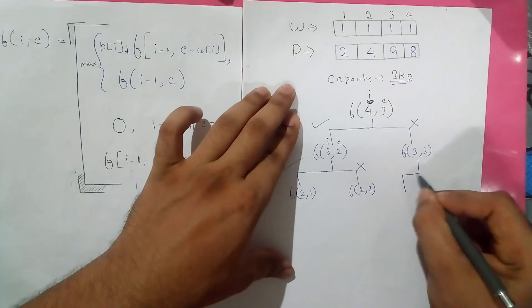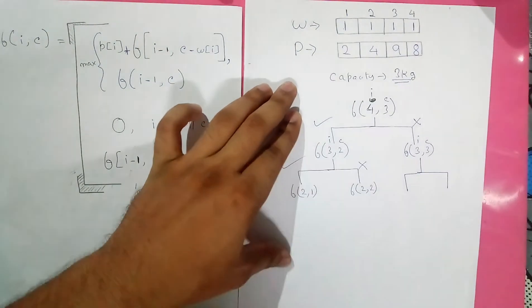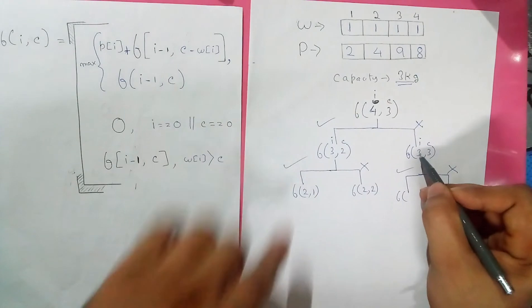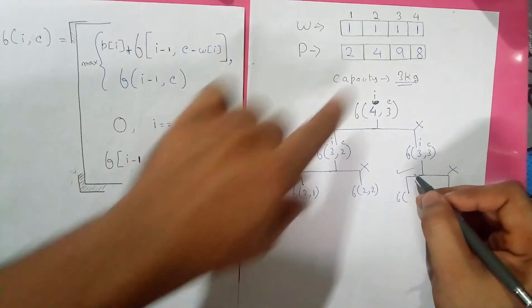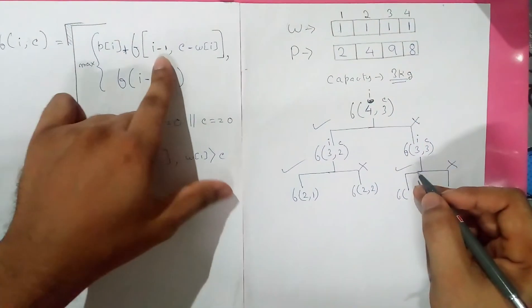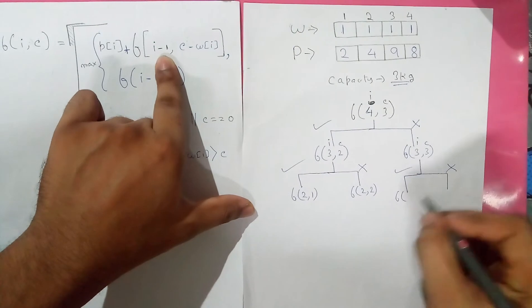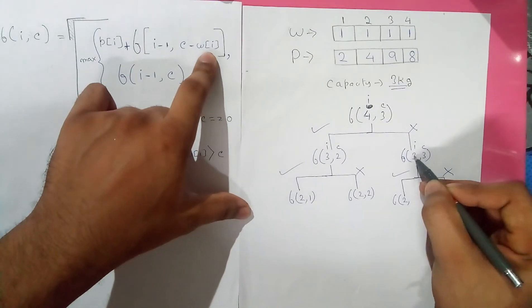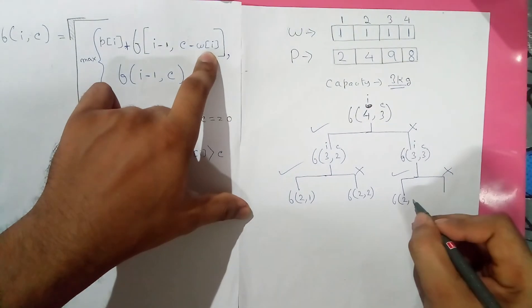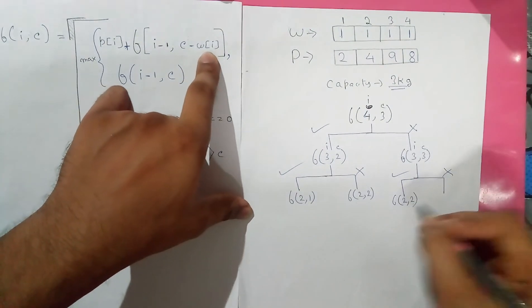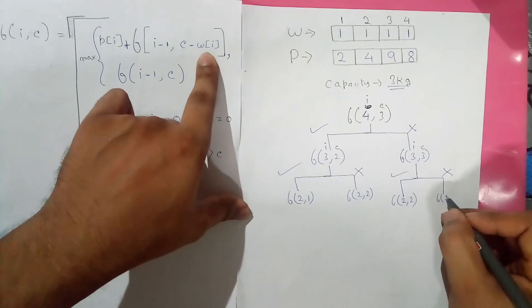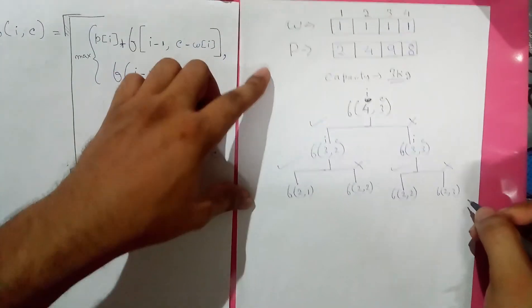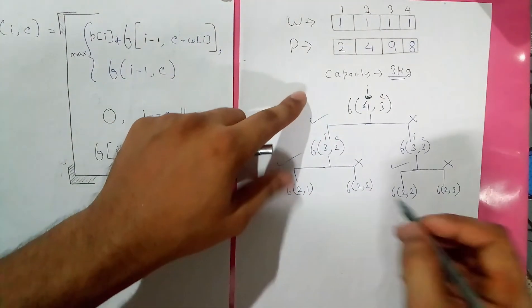Continuing to expand the tree from f(3, 3): including item 3 calls i−1 = 2 with capacity C − W[3] = 3−1 = 2, giving f(2, 2); excluding calls f(2, 3). Now I can already see an overlapping sub-problem: f(2, 2) appears here in two different branches of the tree.